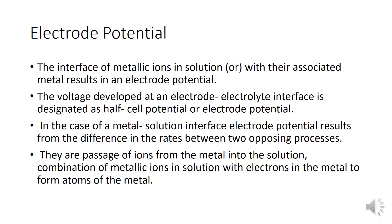In the case of a metal-solution interface, electrode potential results from the difference in rates between two opposing processes: the passage of ions from the metal into the solution, and the combination of metallic ions in solution with electrons in the metal to form atoms of the metal.